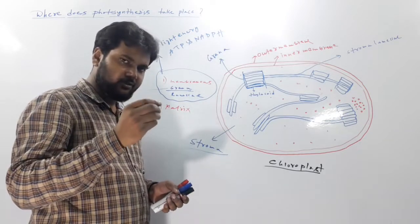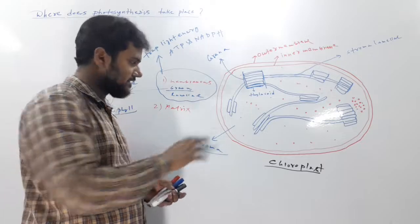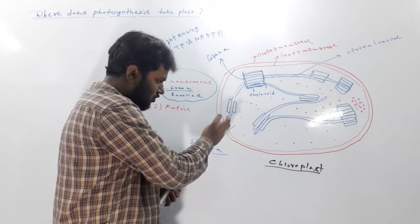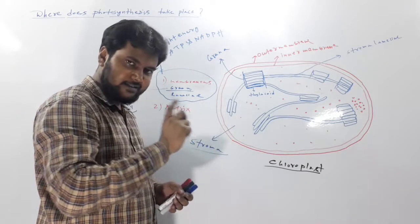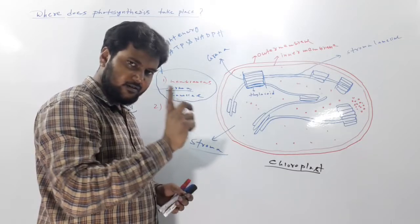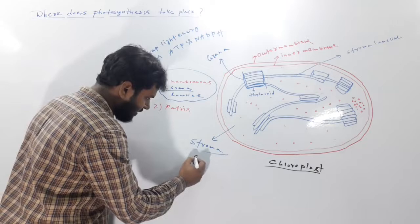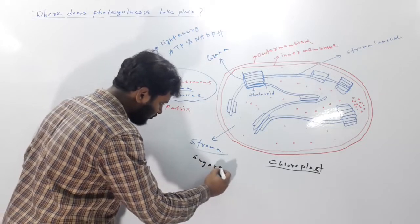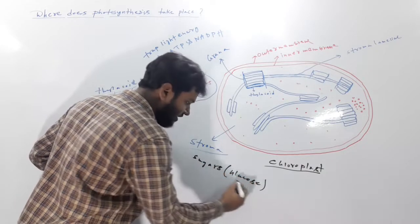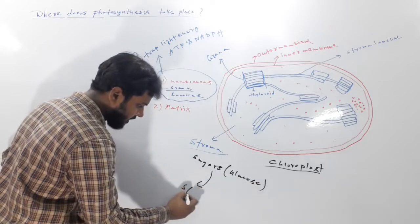All the enzymes which are required for photosynthesis are present in this stroma. And this stroma part catalyzes all the enzymatic reactions and it forms sugars. That means glucose, which in turn forms starch.